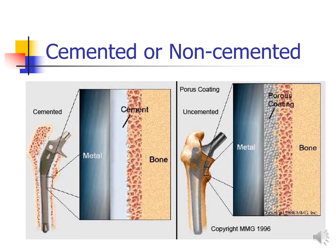Weight bearing status is largely driven by whether the prosthesis was cemented or not. A cemented prosthesis uses medical-grade cement at the bone interface and is typically used in individuals who don't have very good bone quality going into surgery. In contrast, a non-cemented prosthesis uses porous coating on the metal implant into which bone will grow over time to secure the prosthesis — a process that takes at least about six weeks. The non-cemented approach is likely to allow the prosthesis to last a little bit longer.